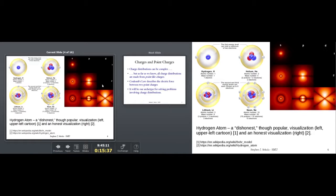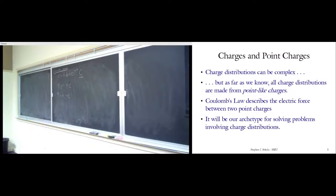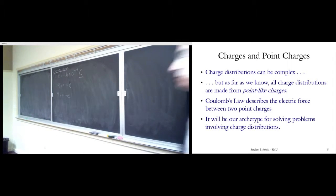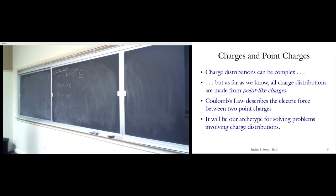We're going to use point-like charges as our building block for everything in nature. What we're going to do today is work a problem involving Coulomb's law, which is the law that describes the electric force between two point-like charges. Then I'm going to give you a problem, you can work it in pairs with somebody next to you, and when anyone gets stuck, we'll stop and talk about where the sticking point is. As far as we know, the electron can be best described as a perfect point in space — we don't know that it has any physical size whatsoever.